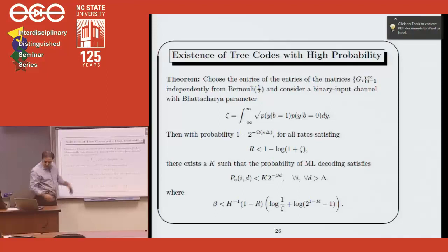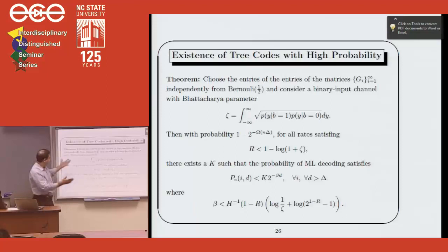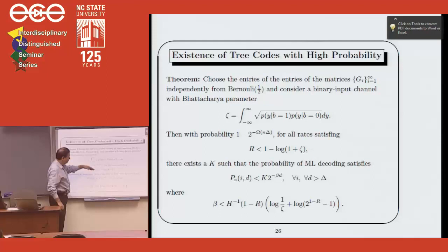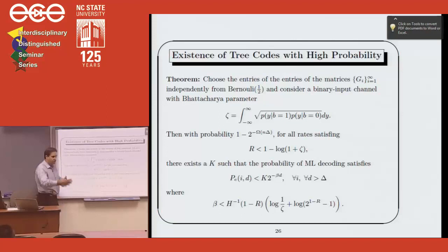For example, if you take a generator or parity check matrix and fill it with random Bernoulli one-half entries, you get strong theorems. For any channel with a Bhattacharya parameter, for all rates up to some value, you get an error exponent beta, where beta has some relationship with the chosen rate. There's a trade-off: the higher the rate, the worse the exponent. But tree codes exist — if you tell me the rate, as long as it's below this threshold, I can tell you the exponent you'll get, and you can use this to stabilize things.